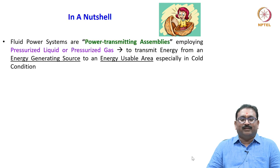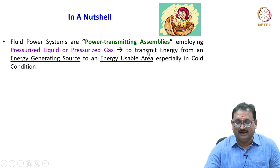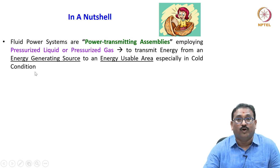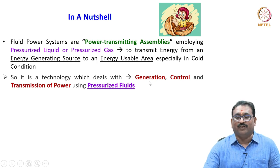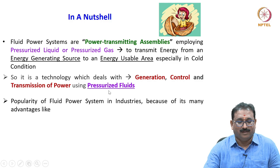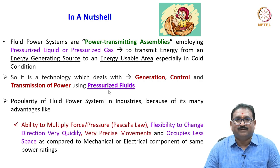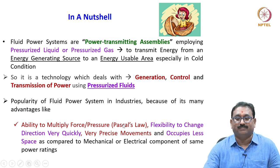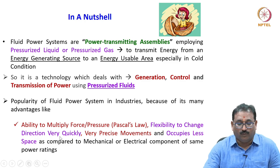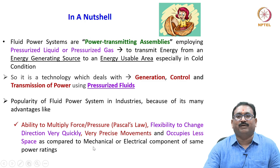In a nutshell, fluid power systems are power transmitting assemblies employing pressurized liquid or pressurized gas to transmit energy from an energy generating source to an energy usable area, especially under a load condition. It is a technology that deals with generation, control, and transmission of power using pressurized fluids. The popularity of fluid power systems in industries is due to many advantages: the ability to multiply force or pressure is possible because of Pascal's law, flexibility to change direction very quickly, very precise motion, and less space occupied compared to other two power transmission methods.